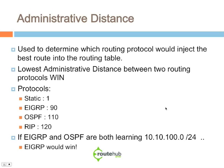Here are some administrative distance numbers for common protocols. Static routes have an admin distance of 1, EIGRP is 90, OSPF is 110, and RIP would be 120. For example, if EIGRP and OSPF are both learning 10.10.100.0/24, EIGRP would win and would inject that best possible path into the global routing table.